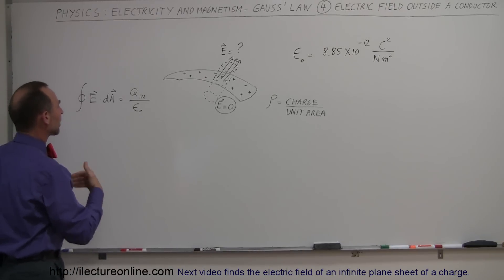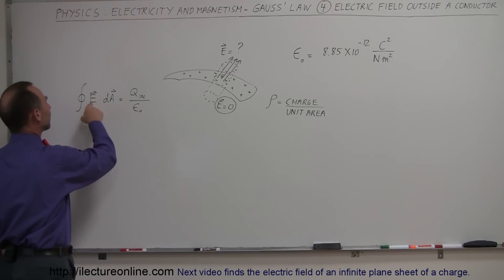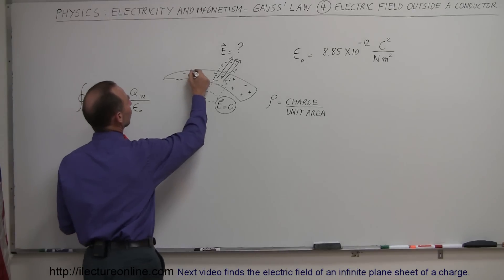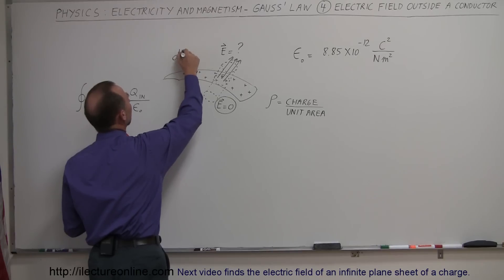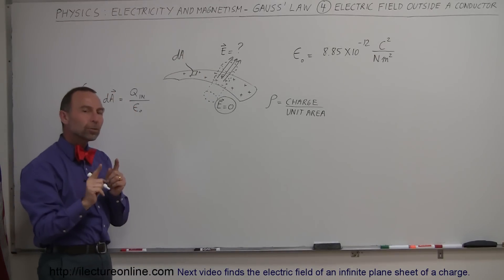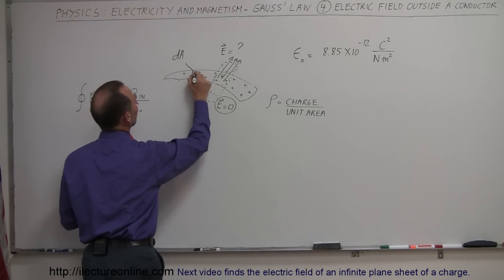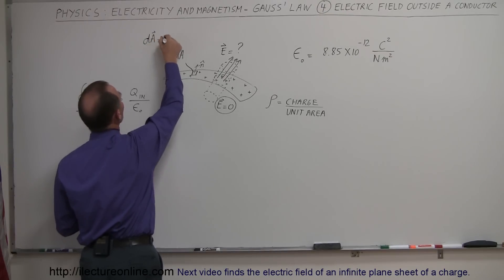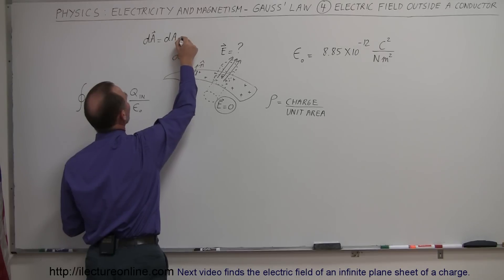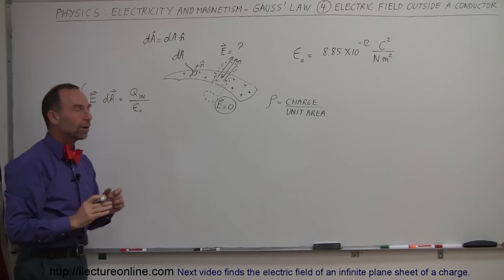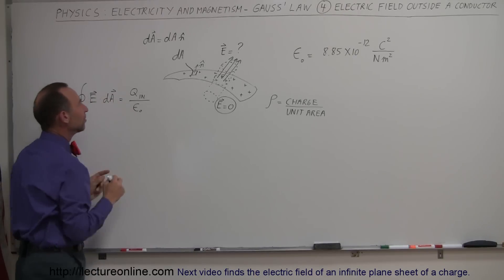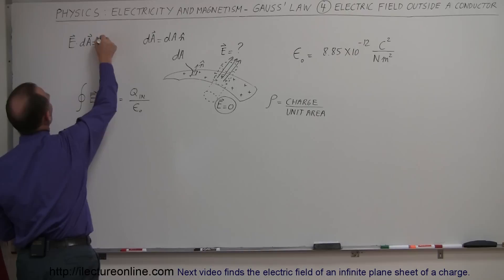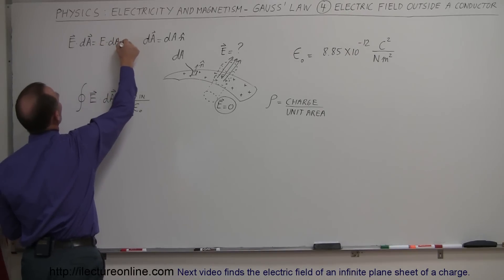Here's the equation that describes Gauss's law. It says that the surface integral of the electric field times dA — where dA is a small area element — and if you want to make that a vector quantity, you multiply it by the unit vector perpendicular to that surface, called n-hat. So the vector dA equals the scalar dA times the unit vector n. With a dot product, E dot dA equals E times dA times the cosine of the angle between them.